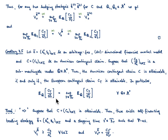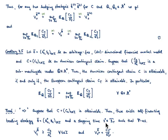So let us have a look at the proof. I will first prove the direction that if the American contingent claim is attainable, then it implies that the corresponding European contingent claim is also attainable. Since the American contingent claim is attainable, we know there exists a self-financing trading strategy H-bar and stopping time tau star such that P almost surely the discounted value process with respect to H-bar dominates the discounted American contingent claim, and moreover at tau star equality holds true.